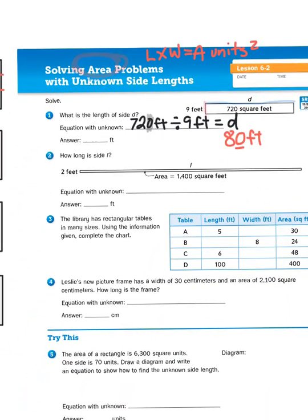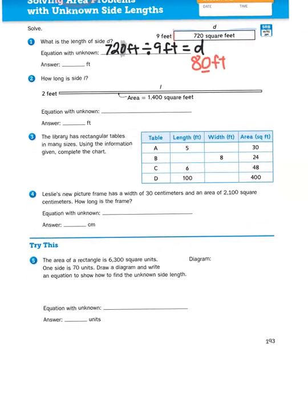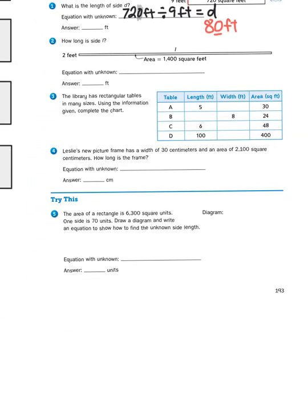So that's all you have to do here. You have to apply that formula. Length times width equals area. And you just have to compensate for the missing measurement. You're either missing the length or the width. Let's try one more.